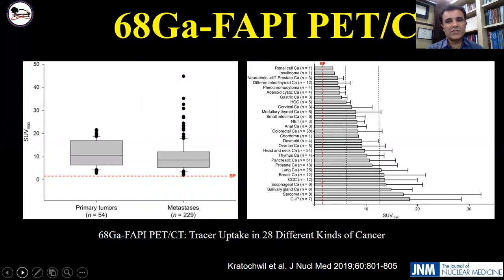One good study was done by the Trabelsi group from Heidelberg. They assessed FAPI with FAPI-04 PET-CT in 80 cases with 28 different types of cancers. They showed no significant difference in SUV between primary and metastatic cases. The highest uptake was seen in sarcoma, salivary, esophagus, cholangiocarcinoma, breast, and lung cancers. The lowest uptake (SUV below 6) was in RCC, insulinoma, differentiated thyroid cancer, pheochromocytoma, adenomyosis cancer, and gastric cancer. Uptake in HCC, cervical cancer, medullary, NET, and colorectal was intermediate, between 6 and 12.